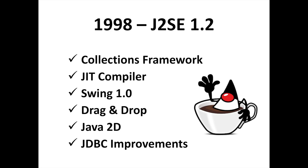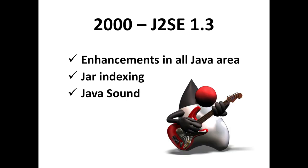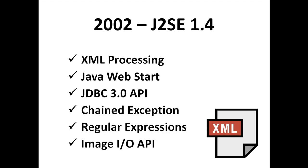A big step forward for Java. Java 1.3, codename Kestrel, was released on May 8, 2000, with enhancements in all Java areas. It also added Java Sound and Java Naming and Directory Interface (JNDI) in core libraries. Besides, HotSpot JVM was included too.